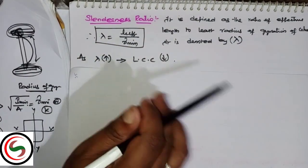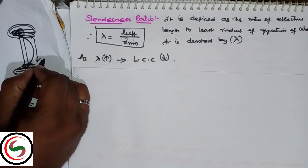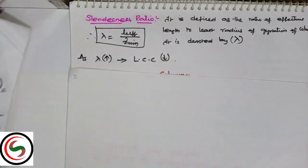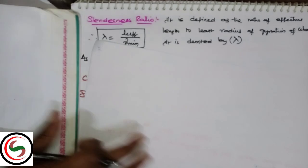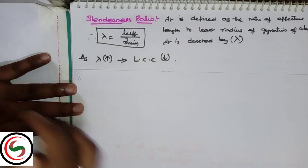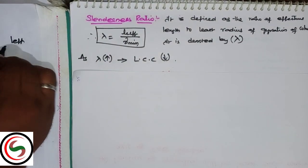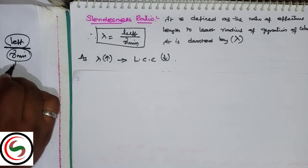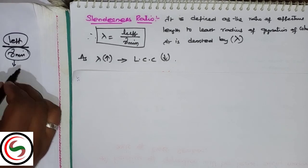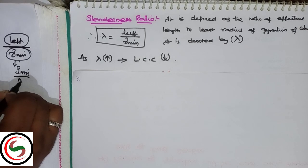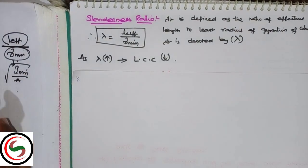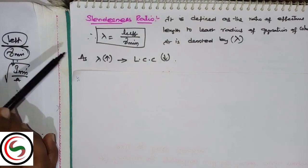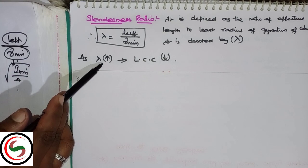Next, what is slenderness ratio? It is denoted by lambda, which equals the ratio of L effective by R minimum. So it's the effective length by radius of gyration. R minimum is the radius of gyration, which is the square root of I minimum by area.